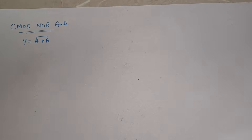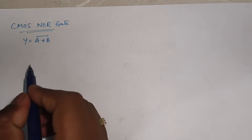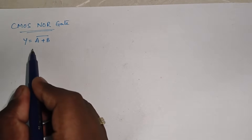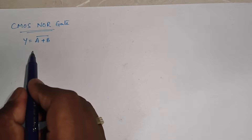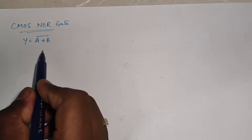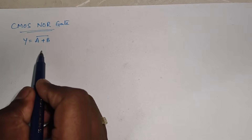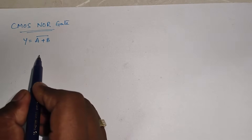Hello everyone, welcome back to Explore Electronics. In this video let us see the CMOS circuit and layout for NOR gate. NOR gate will be having the expression Y is equal to (A + B) bar. Here A and B are the inputs. Now we need to write the CMOS NOR gate structure.